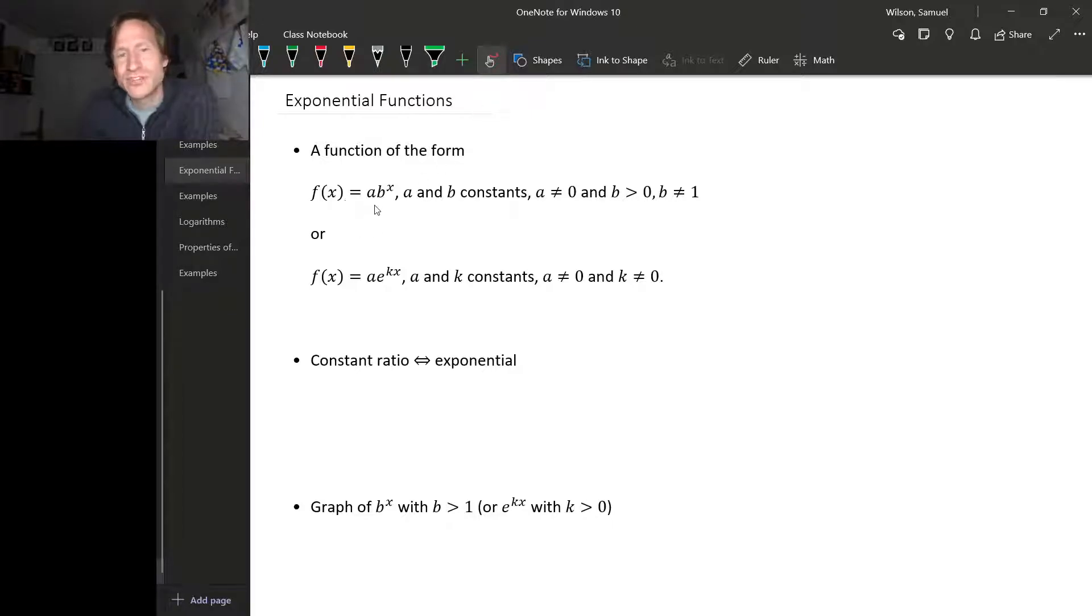An exponential function is just any function that has this form. It's some constant—a and b are constants. a can't be zero because otherwise this formula just always gives you zero. And b has to be bigger than one.